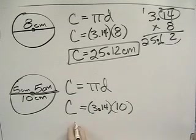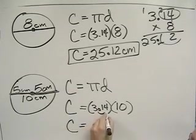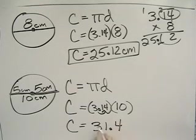Everybody knows the shortcut that when multiplying by 10, all you have to do is move that decimal over one place to the right. So in this case, the answer is 31.4 centimeters.